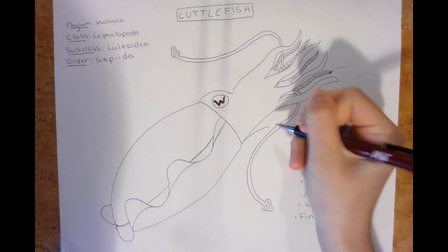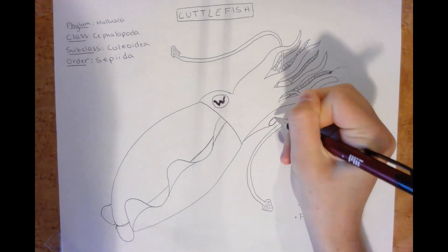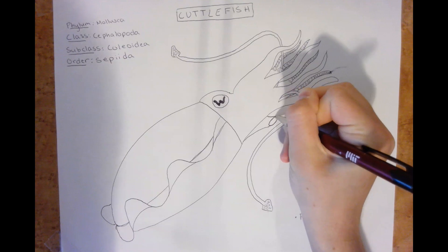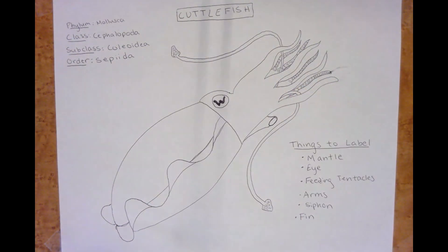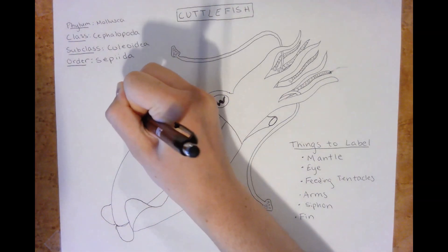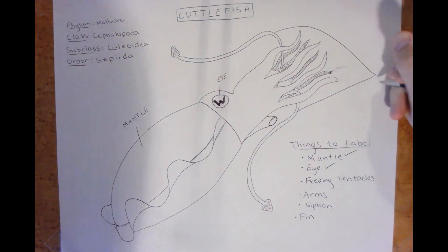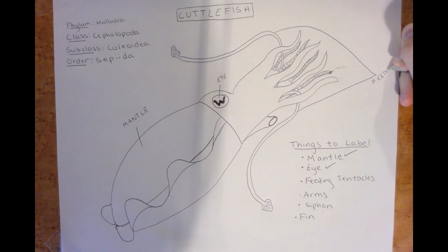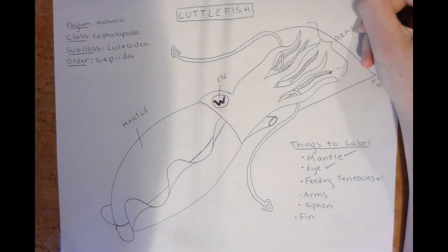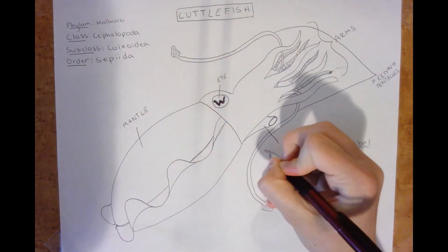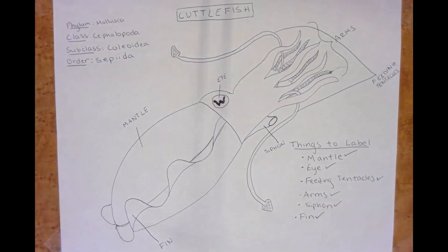Finally, the cuttlefish uses its siphon for jet propulsion by shooting water out of the mantle cavity. Now we can label the oval-shaped mantle, the camera-like eye, the two long feeding tentacles, the eight shorter arms, the siphon, and the undulating fin.